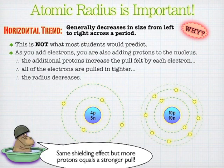So that's the horizontal trend. Speaking in broad strokes, as you move left to right, the radius tends to get smaller, because even though you're adding more electrons, the pull is getting greater.